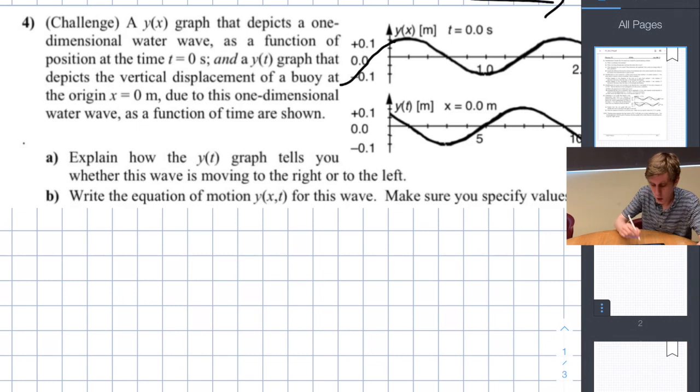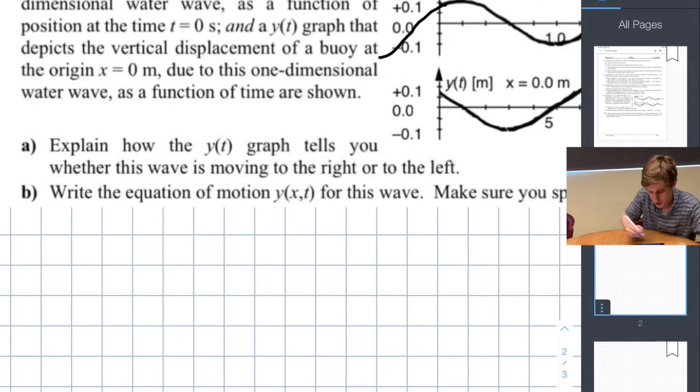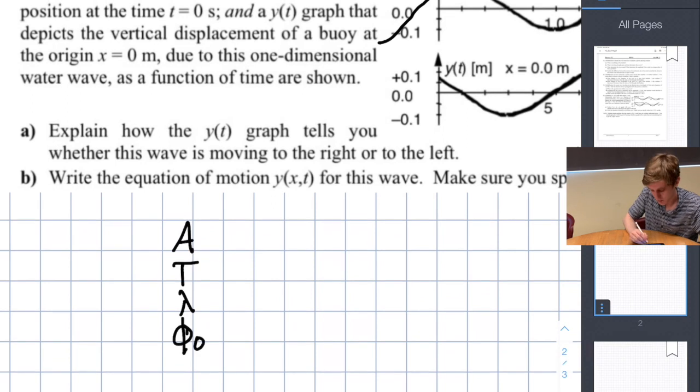Now we want to write an equation for the wave. If we want to do this we need to know what all the individual terms are. As a refresher those terms are amplitude, period, wavelength, phase constant, and the equilibrium position.